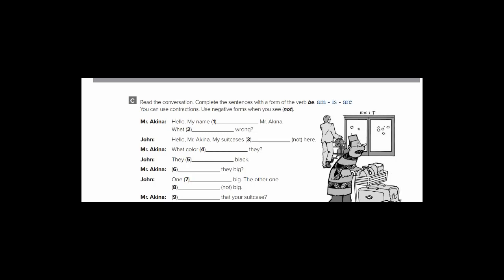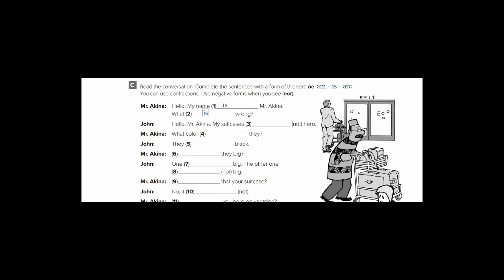This is a conversation between a man in a hotel, maybe, and a traveler. So Mr. Akina said, hello, my name is Mr. Akina. What is wrong? John said, hello Mr. Akina, my suitcases - what's the meaning of suitcases? This is the photo of suitcases. It means حقائب plural.